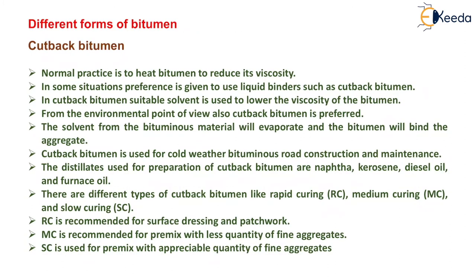Now the different forms of bitumen — cutback bitumen. Normal practice is to heat bitumen to reduce its viscosity. In some situations, preference is given to use liquid binders such as cutback bitumen. In cutback bitumen, a suitable solvent is used to lower the viscosity. From an environmental point of view, cutback bitumen is also preferred. The solvent from the bituminous material will evaporate and the bitumen will bind the aggregate. Cutback bitumen is used for cold weather bituminous road construction and maintenance.